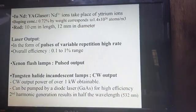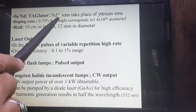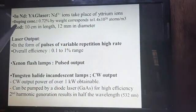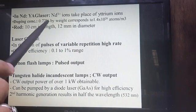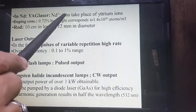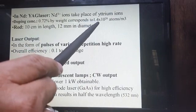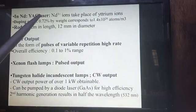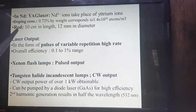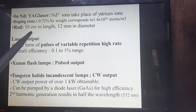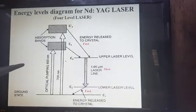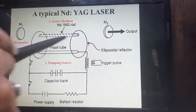In this laser, Nd³⁺ ions take the place of Cr³⁺ ions. The doping concentration is approximately 0.72% by weight, corresponding to 1.4 × 10²⁶ atoms per meter cube as the number density. The dimensions of the rod used are 10 centimeters long and 12 millimeters in diameter.